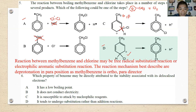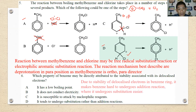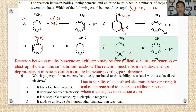Number six: which property of benzene may be directly attributed to the stability associated with delocalized electrons? Due to the stability of the delocalized electrons, benzene is hard to undergo addition reactions like other alkenes do. Instead, benzene prefers to undergo electrophilic aromatic substitution. The best answer is D.